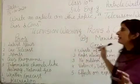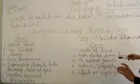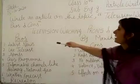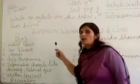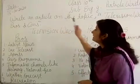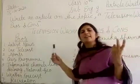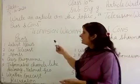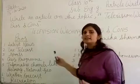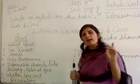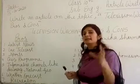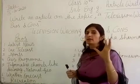You have to write an article. The topic is television watching, pros and cons. Pros and cons means advantages and disadvantages. Everything has two parts — one is advantage and the other is disadvantage. In this article, you have to write both advantage and disadvantage.